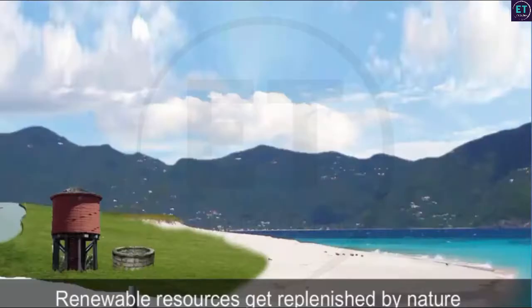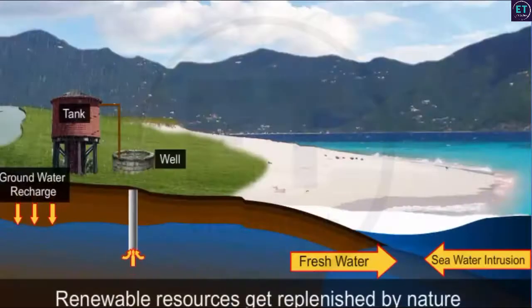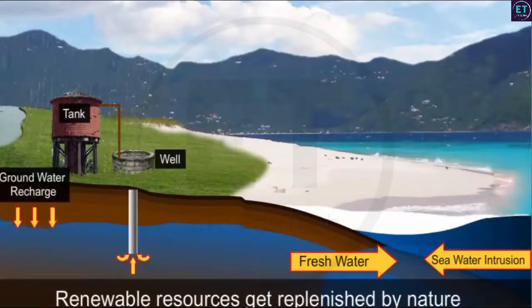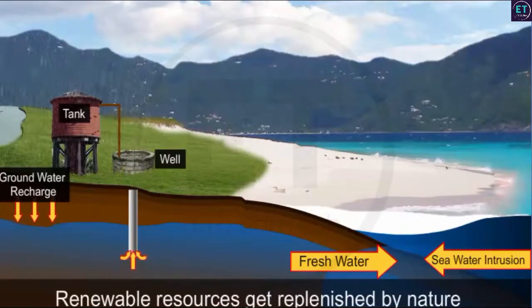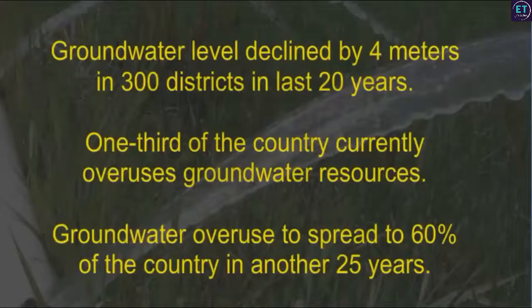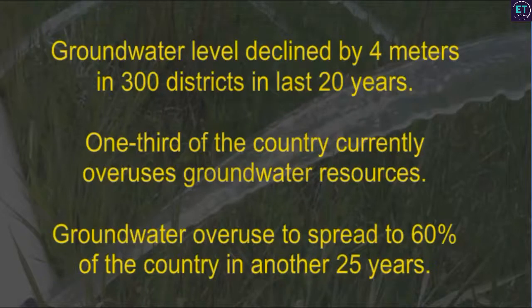Renewable resources like groundwater get replenished by nature over a period of time. However, if we use groundwater faster than what nature can restore, we run the risk of facing a scarcity of groundwater. Here are some worrisome facts about the overuse of groundwater in India, especially in the agricultural regions of Punjab, western Uttar Pradesh, the coastal plains, and rapidly expanding urban areas.